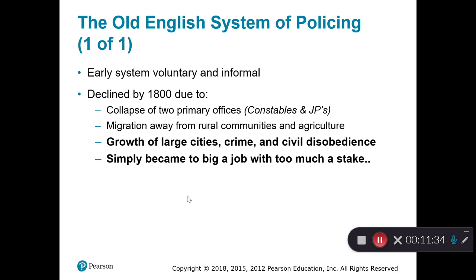In the early English system of policing, we had a voluntary, informal system, and we saw this begin to decline by the 1800s due to the collapse of the two primary offices — the constable and the justice of the peace. There was a migration of population from rural and agrarian communities to the growth of large cities as a result of the Industrial Revolution and people looking for jobs in manufacturing and commerce. It simply became too big a job in those environments, and they needed to move to a more professional model of policing — hence the move from constables and JPs to magistrates in England.